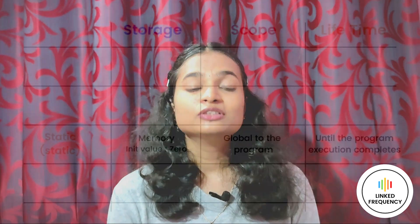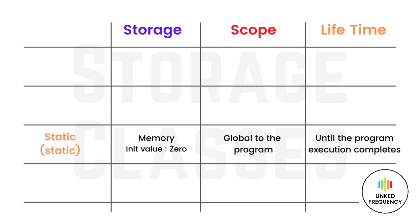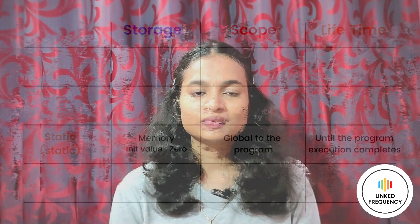For example: static int value = 10. The overall features of a static variable are: storage is in memory, default initial value is zero, scope is global, and the lifetime is active until the program execution is completed.